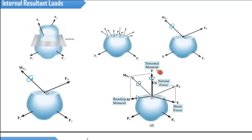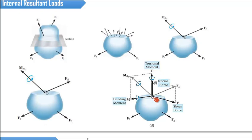There is no need to get confused about the naming. When we resolve the resultant in the normal direction — normal to the surface — that component is named the normal force. When we resolve the force into a direction parallel to the surface, it is called the shear force. The torsional moment creates a twisting effect on the body. The component resolved to the y-axis creates a bending effect and is called the bending moment.